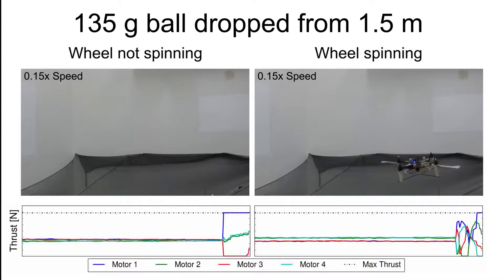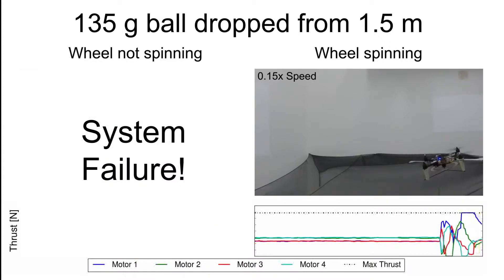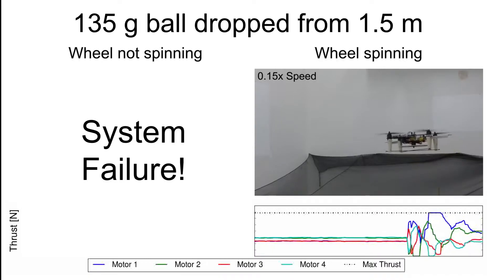However, when the wheel is spinning, its angular momentum helps keep the thrust direction of the quadcopter nearly vertical, allowing the vehicle to easily recover.